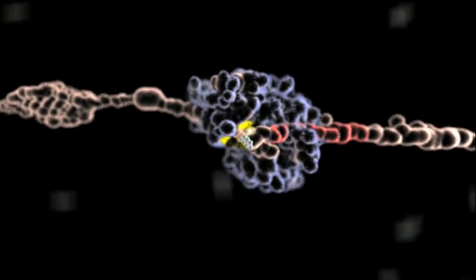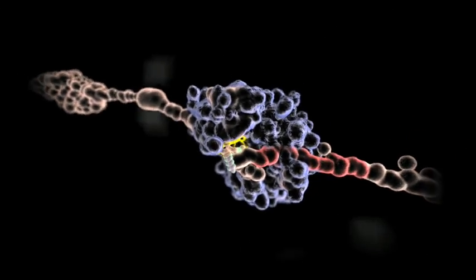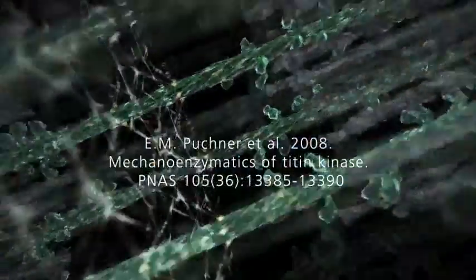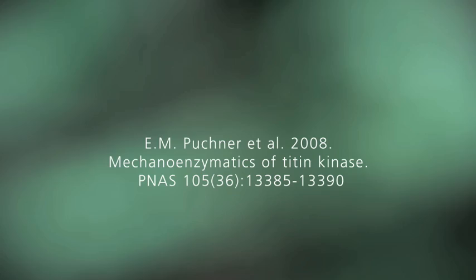Titin kinase is now activated like a mechanical fuse and marks other reporter molecules with parts of ATP. These reporters spread the signal of the force imbalance and regulate the cellular factory, producing new proteins for the growth of muscle.